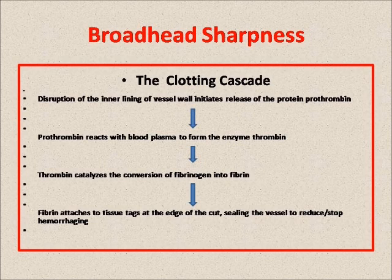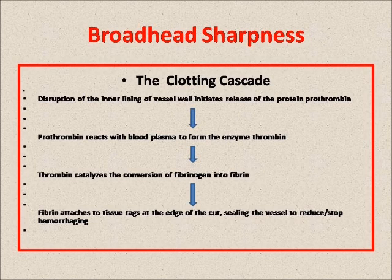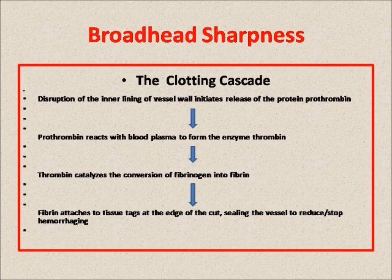The fibrin attaches to little rough ends of tissue at the cut blood vessel. We can greatly influence this by the type of edge bevel on your broadhead. If you use the thinnest, smoothest, sharpest edge possible, when you cut that vessel you're damaging fewer cells lining it. That means far less prothrombin is released, and at the other end of the cascade, less fibrin is produced. That sharp edge also leaves fewer tissue tags where it cut the vessel, so now you have fewer tissue tags for the reduced amount of fibrin to attach to. What you get is a severed blood vessel that bleeds more freely for a longer period of time — and that's exactly what you're trying to do.